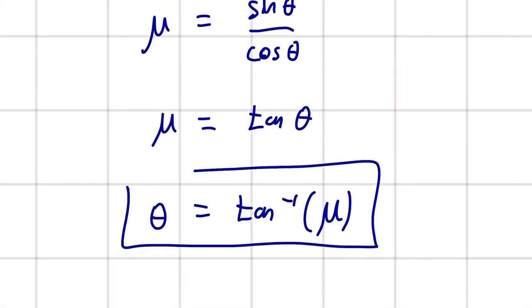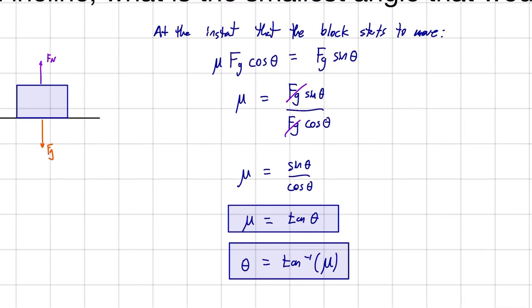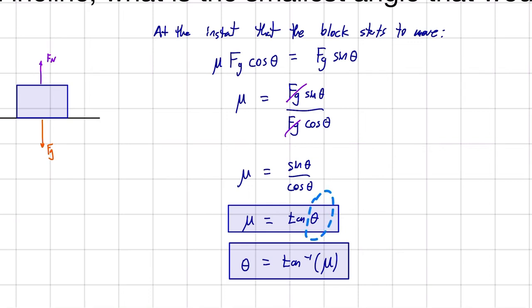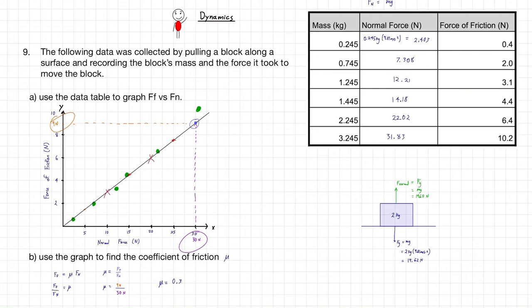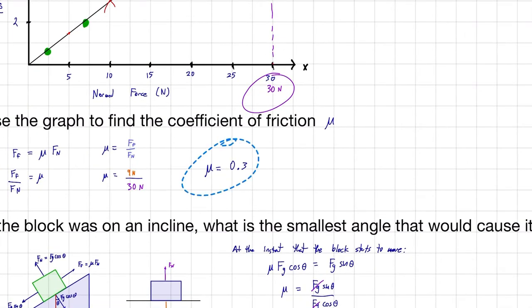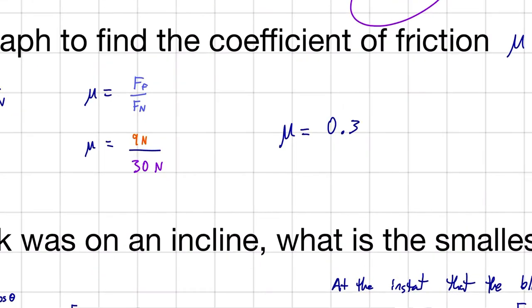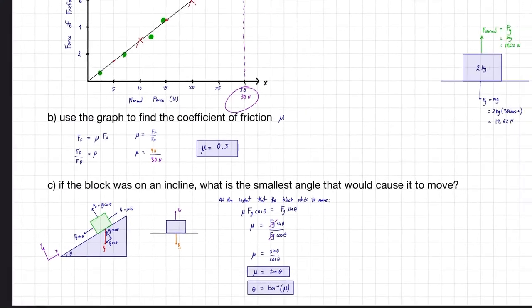Sometimes you'll know the theta and want to find mu. Other times you'll know mu and you want to find theta. In this case, we know the mu. It wasn't given to us in the question, but it was a value that we found in the last step of this problem. We found that mu is equal to 0.3.